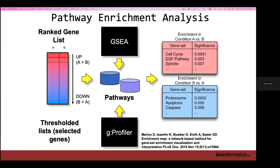You can run g:Profiler multiple times. For example, the ependymoma network Gary showed this morning — with nine types of ependymomas — was actually done using g:Profiler, not a GSEA analysis. You can do multiple thresholded lists with g:Profiler and generate multiple sets of results to visualize together. g:Profiler is not limited to just one list; you can run it with many things.